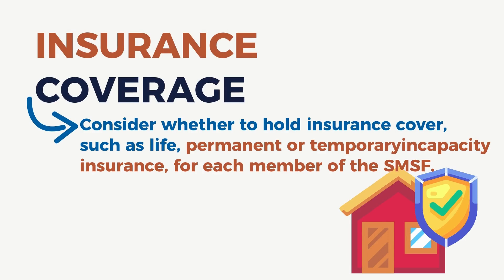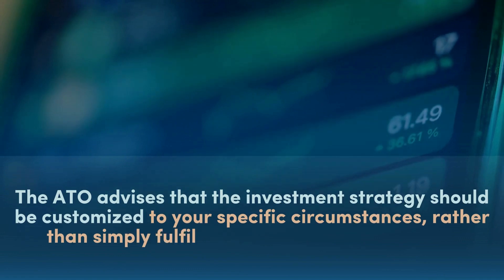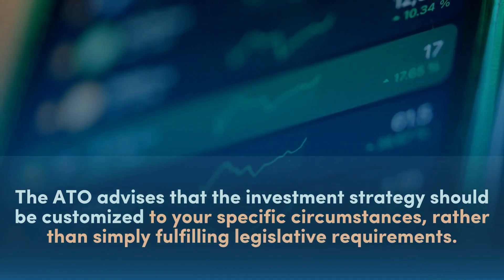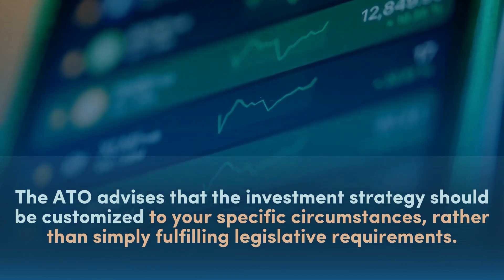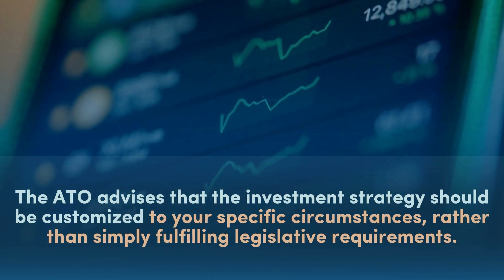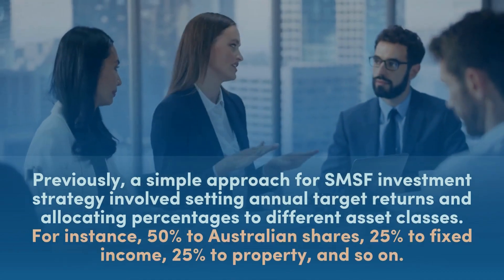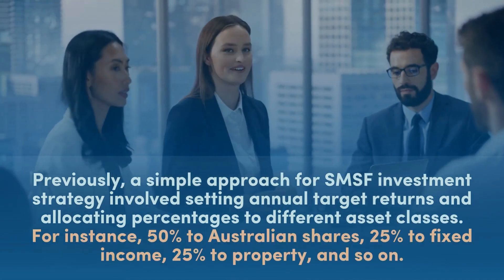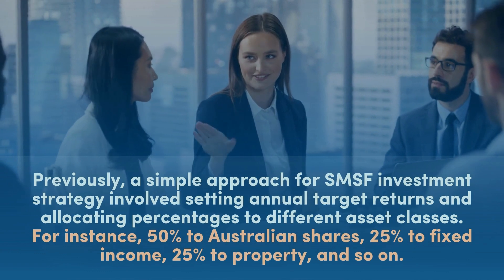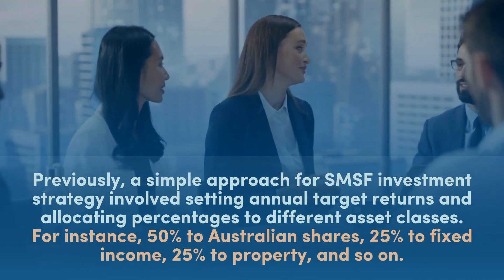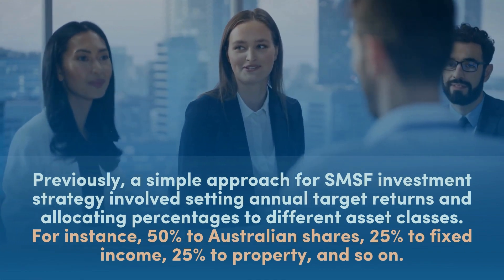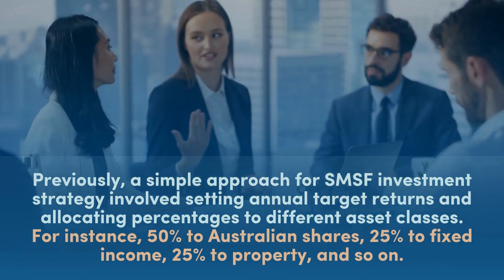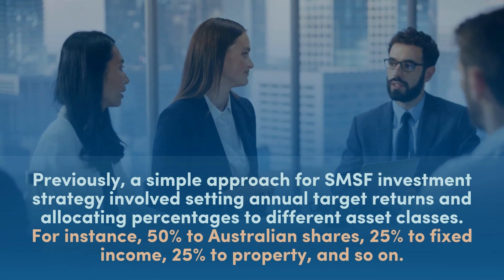Insurance coverage: consider whether to hold insurance cover such as life, permanent, or temporary incapacity insurance for each member of the SMSF. The ATO advises that the investment strategy should be customized to your specific circumstances rather than simply fulfilling legislative requirements. A simple approach involves setting annual target returns and allocating percentages to different asset classes — for instance, 50% to Australian shares, 25% to fixed income, 25% to property, and so on.